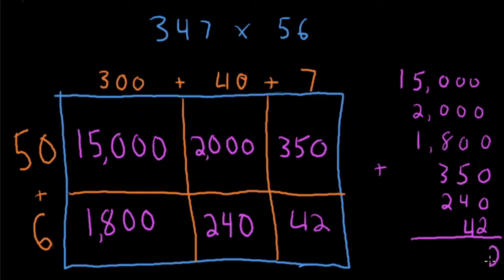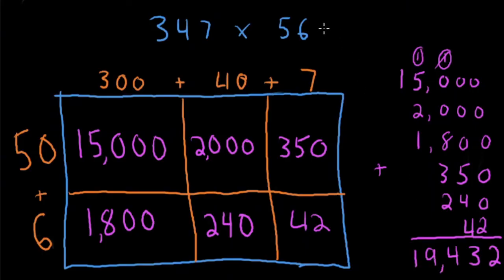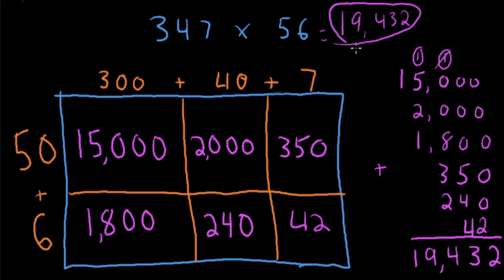Let's add it up: ones column gives us 2; tens column: 9, then 13 — regroup; hundreds column: 11, 13, 14 — regroup; thousands: 7, 8, 9 — regroup; ten-thousands: 1. Our answer for 347 times 56 is 19,432. Pause the video, check where you made mistakes, and I'll drop another video with more practice problems using the area model strategy. Thanks for watching — drop me some comments and let me know where you're still challenged. Mr. C out.